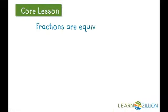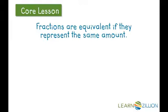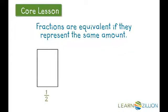Fractions are equivalent if they represent the same amount of space. Let's say we have the fraction one-half. Using a rectangle, if we want to show one-half, we would divide the rectangle into two equal parts because the denominator is two. We would then shade one out of the two parts because the numerator is one.